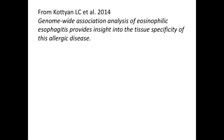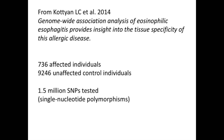A genome-wide association study to find candidate genes associated with EOE was published by Cotien et al. in 2014, and will be our example for examining the data from a GWAS. They used information from 736 affected individuals and 9,246 unaffected control individuals of European ancestry. A total of 1.5 million SNPs were tested throughout the genome.